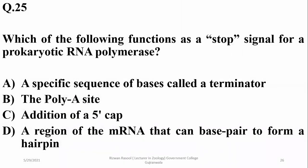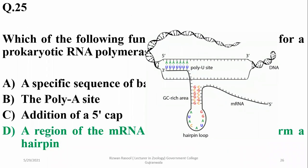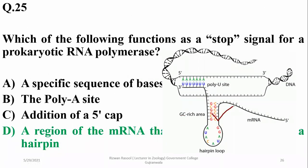Which of the following functions as a stop signal for prokaryotic RNA polymerase? A sequence of nucleotides that forms a hairpin due to a specific sequence — such as a series of GC base pairs on the coding strand of DNA followed by AT base pairs and then four or more uracil residues — so delta. A GC hairpin is formed due to RNA being formed in this region.